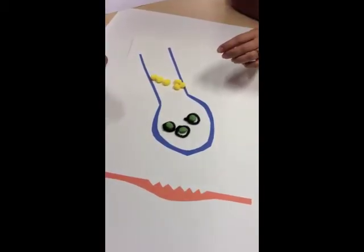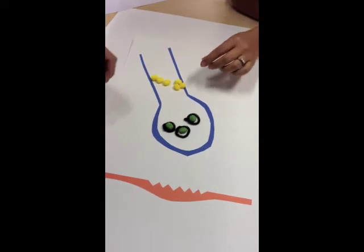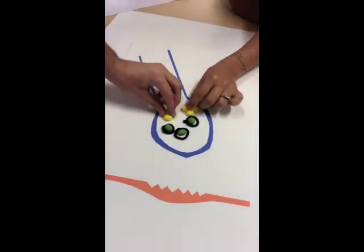After calcium enters the axon, it makes its way down and forces acetylcholine to the end of the synaptic bulb.